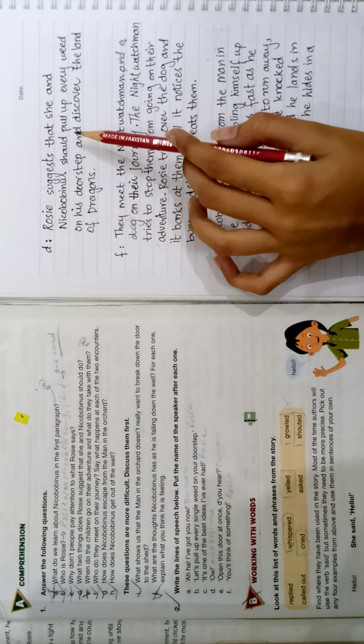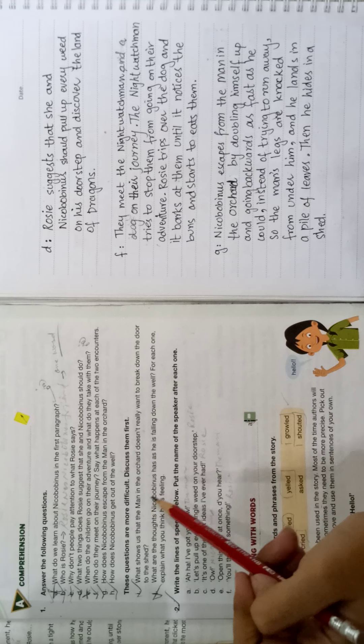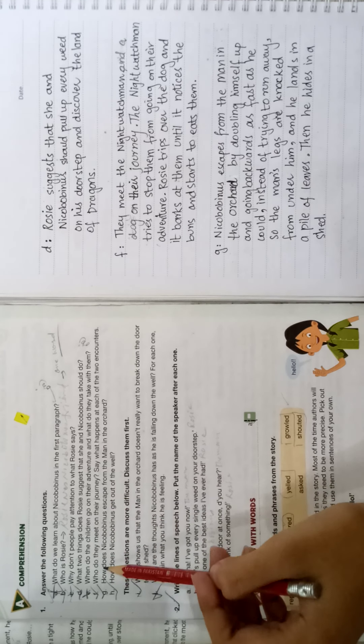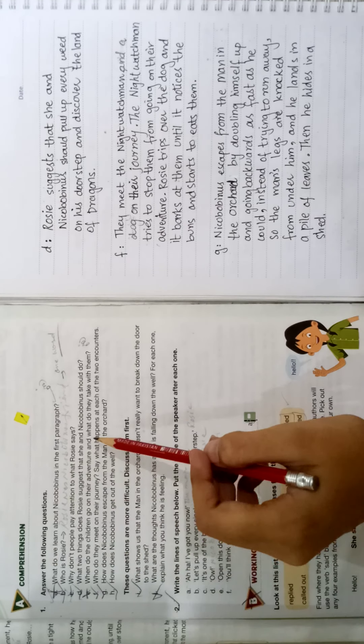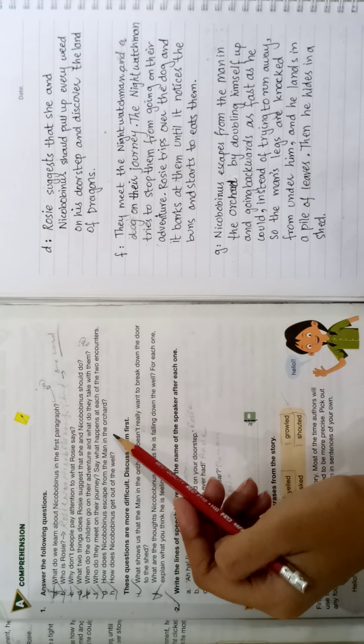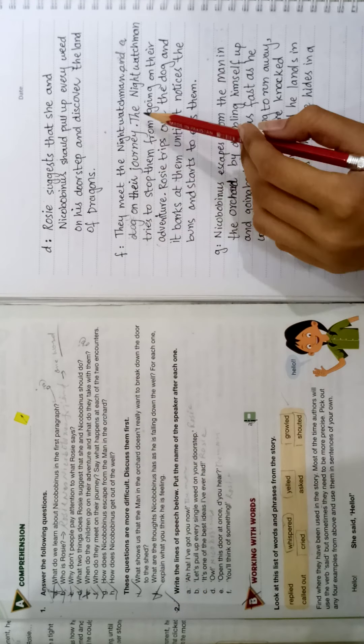Next question we will skip. Why do they meet on their journey? Say what happens at each of the two encounters. They meet the night watchman and the dog on their journey. The night watchman tries to stop them from going on their adventure. Rosie trips over the dog and it barks at them until it notices the buns and starts to eat them.